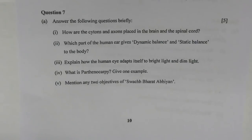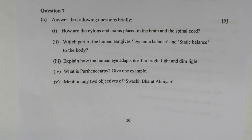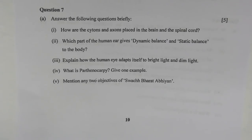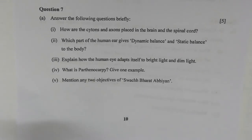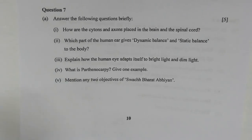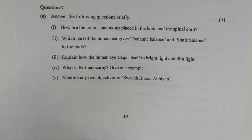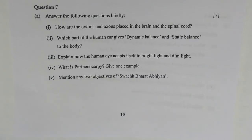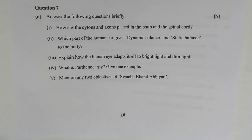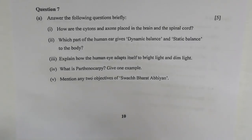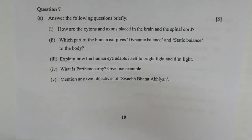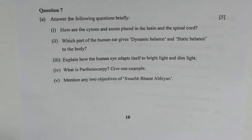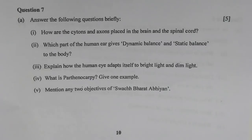Question 7a, number one — how are the cytons and axons placed in the brain and spinal cord? In the brain, the gray matter containing cytons is at the outer portion and the white matter containing axons is in the inner portion. In the spinal cord, this arrangement is reversed: white matter containing axons is at the outer portion and gray matter containing cytons is in the inner portion.